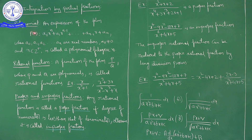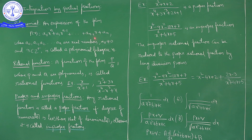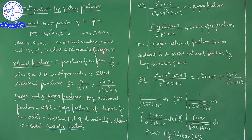First, let's revise what a polynomial is. An expression of the form P(x) = a₀xⁿ + a₁xⁿ⁻¹ + a₂xⁿ⁻² + … + aₙ₋₁x + aₙ, where a₀, a₁, …, aₙ are real numbers, the leading coefficient a₀ ≠ 0, and n is a positive integer, is called a polynomial of degree n.